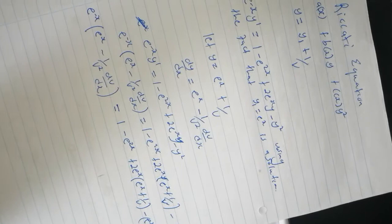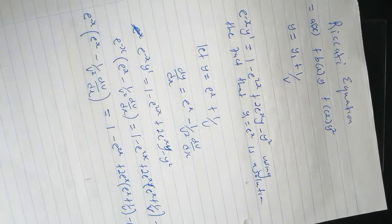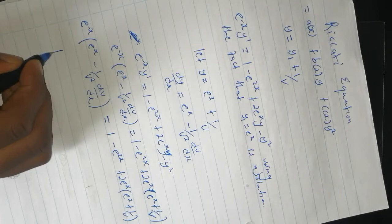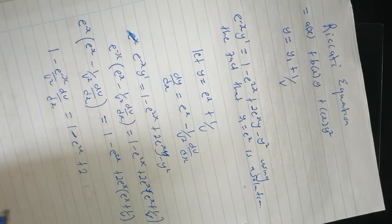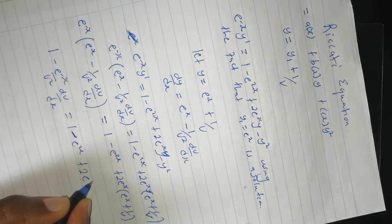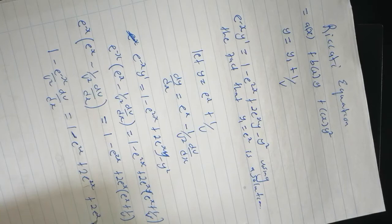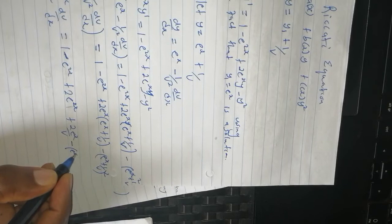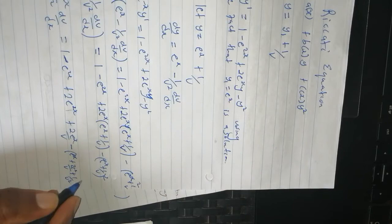I'm going to attach the scans in the description below. So we're going to simplify: 1 minus e to the power negative x over v squared dv/dx equals 1 minus e to the power 2x plus 2e to the power 2x plus 2e to the power x over v minus e to the power 2x plus 2e to the power x over v plus 1 over v squared.